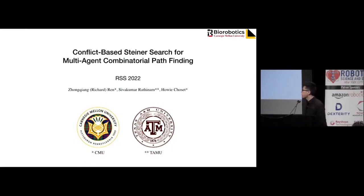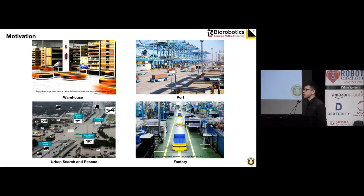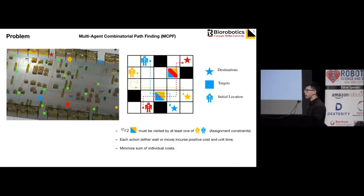Our next paper is a Conflict-Based Steiner Search for Multi-Agent Combinatorial Pathfinding, being presented by Richard Wren. Hello everyone, I'm Richard Wren, a PhD student at Carnegie Mellon, excited to share this work. We have seen multi-agent systems emerging in many applications; an important question is to tell these robots where to go. Very often, robots need to collectively visit a large number of target locations for information gathering or pick-and-place tasks.